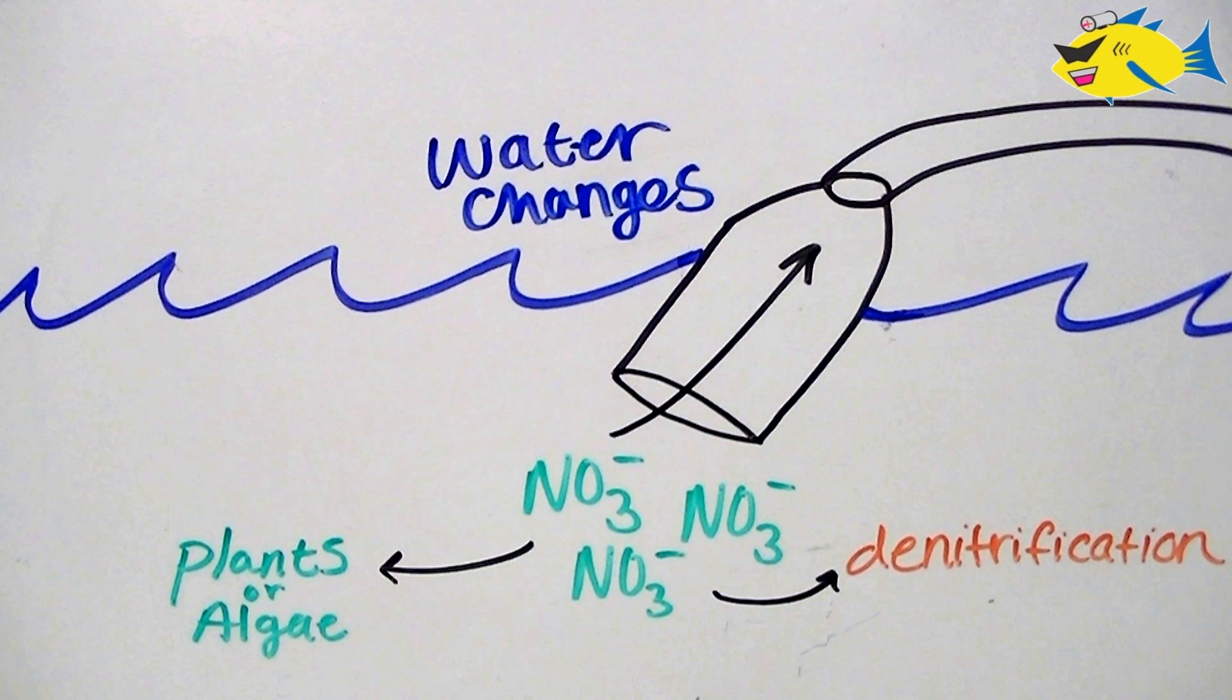Nitrate is less toxic than ammonia and nitrite. It can be removed by plants, algae, and microorganisms, and it can also be removed by doing water changes.